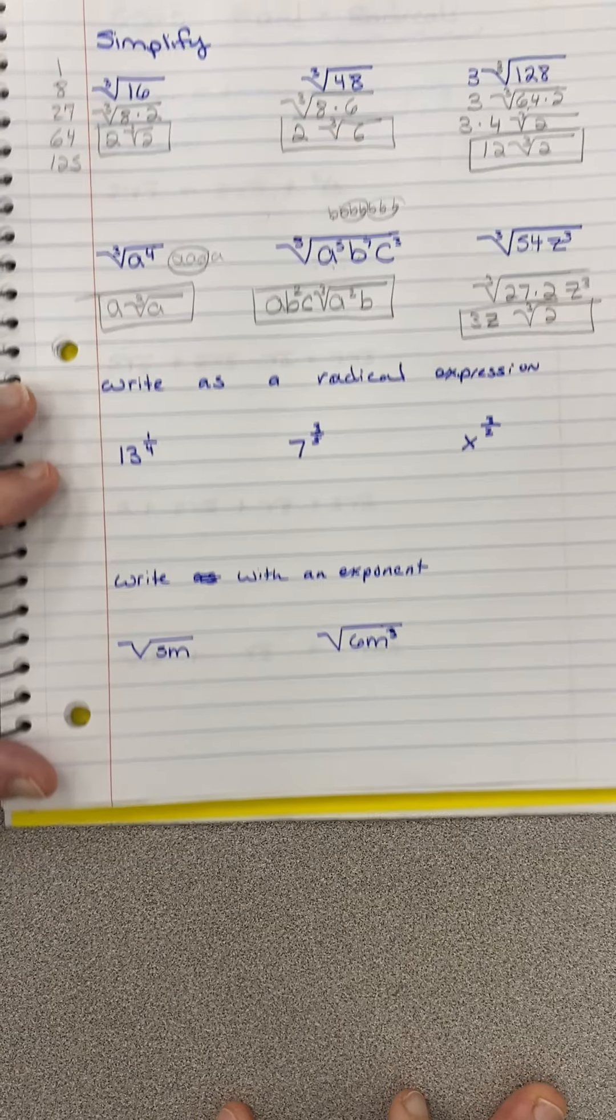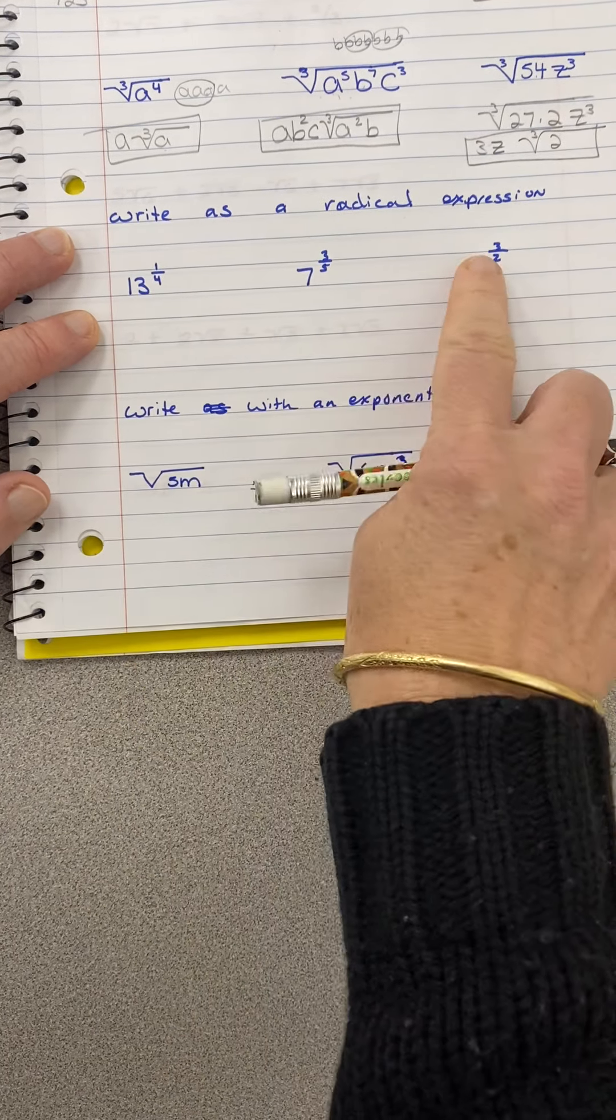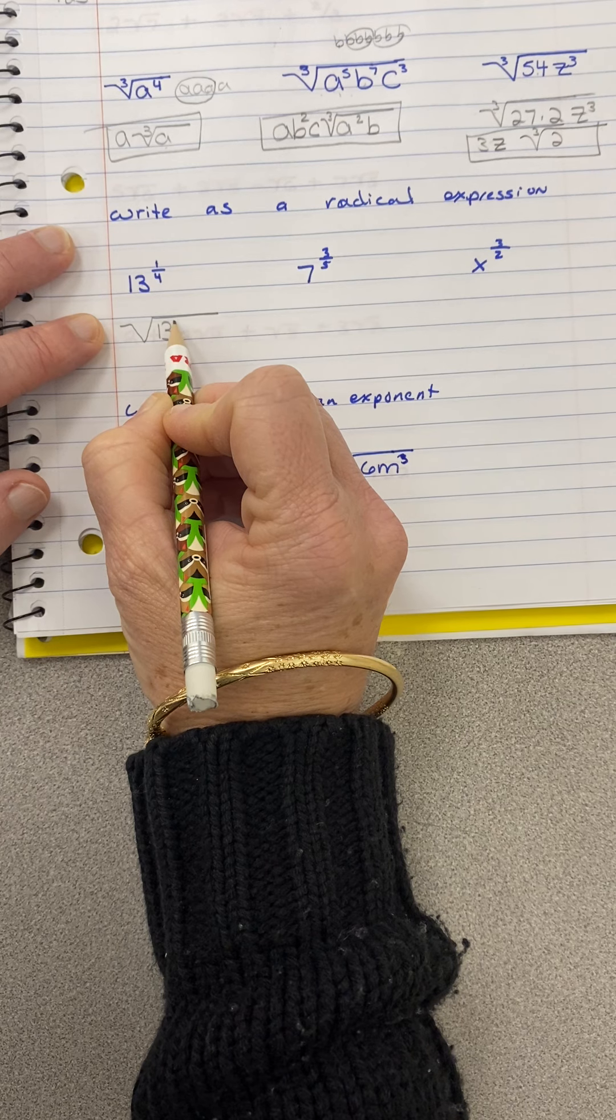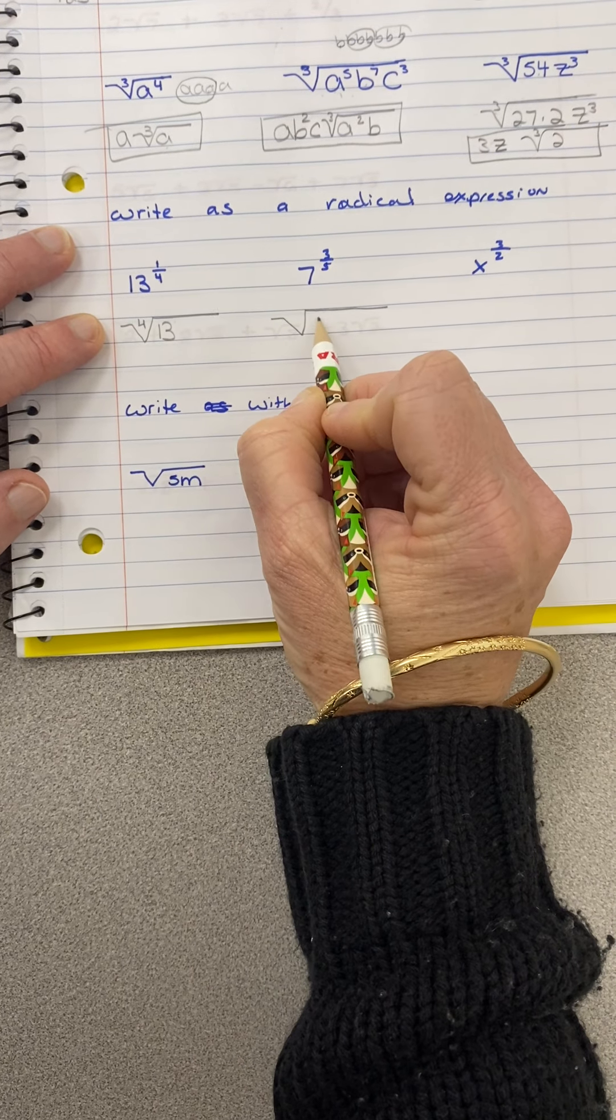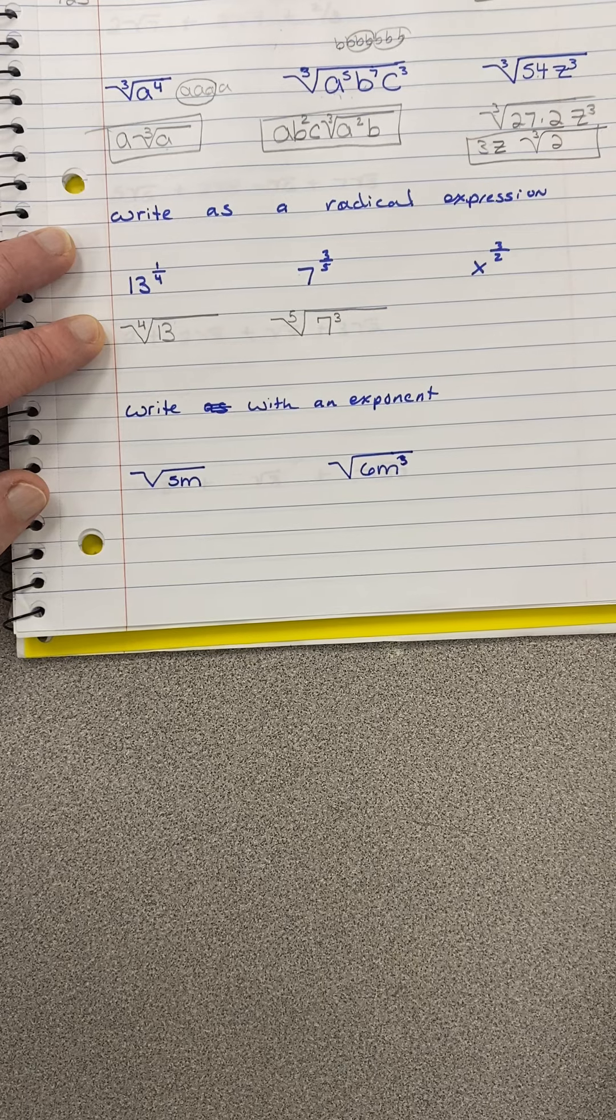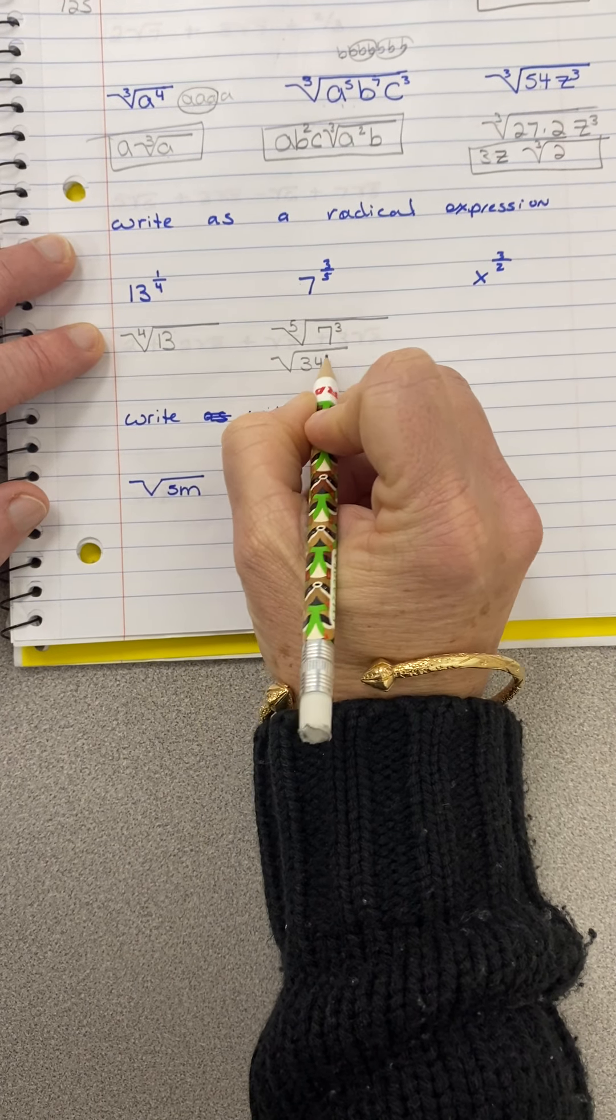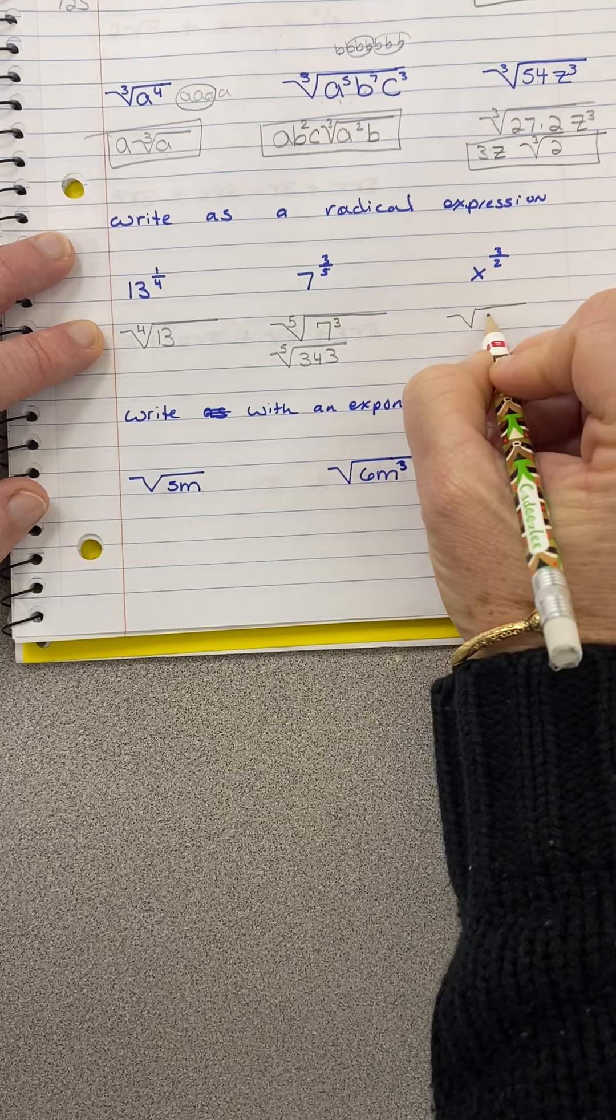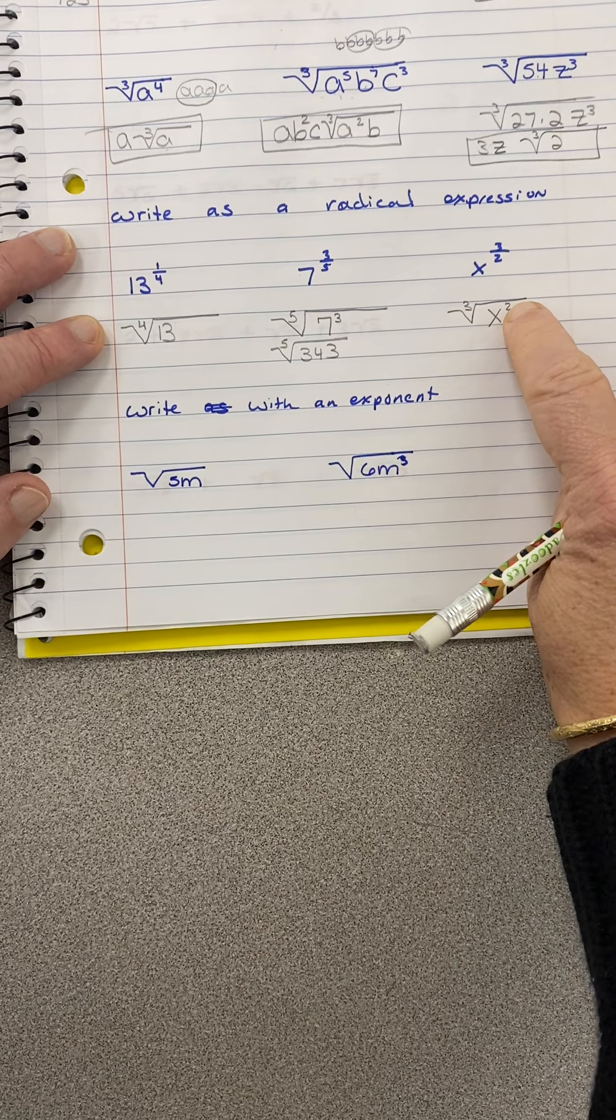I'm going to do this part pretty quickly because I know we've done this before when we're writing as, you know, we're going to take these fraction exponents and write them as radicals. If you remember, the base number goes inside. The numerator is the exponent. It's a 1, so I don't really have to write it. And then this is the index right here. So 7 to the 1/5 power, 3 is the exponent, 5. Now 7 cubed is 343 to the 5th root. And then here, x squared cubed. And we have to leave it like that. If I had a bigger number on here I would have rewritten this.